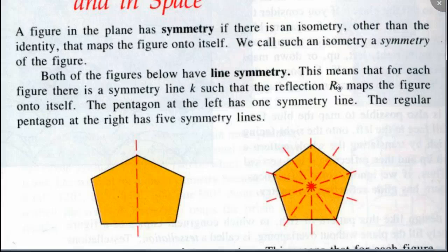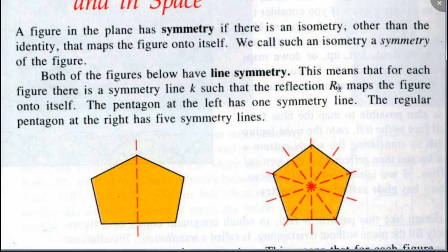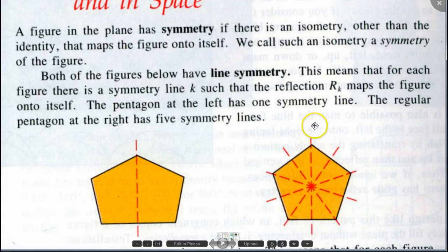So that's what a symmetry is. The figure on the left has one line of symmetry. The figure on the right — how many lines of symmetry does it have? Five. It has five. Right, so you can count them: one, two, three, four, five. So it's got five lines of symmetry.